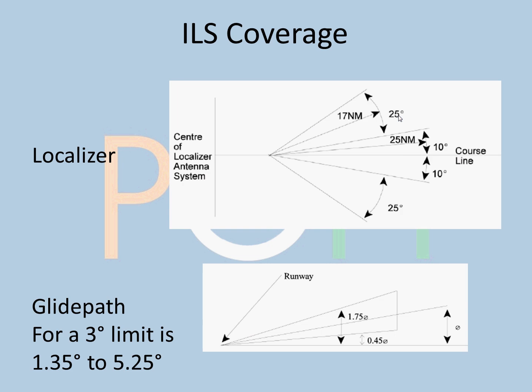ILS coverage: this is the range that we are talking about. Localizer, 10 degrees left or right, has a range of 25 nautical miles. The signal can reach 25 nautical miles, plus or minus 10 degrees left or right of the localizer. Beyond 10, basically 25 degrees, it can reach 17 nautical miles.